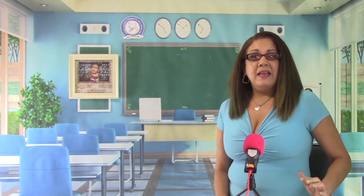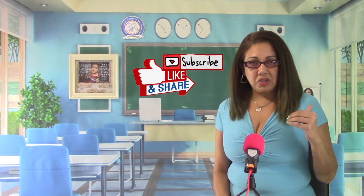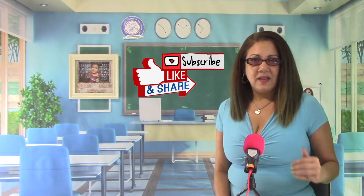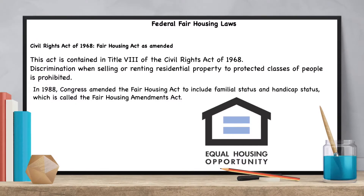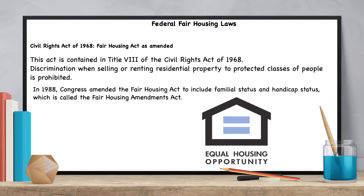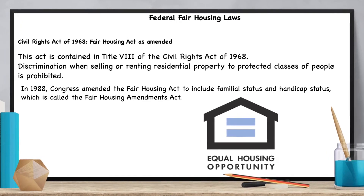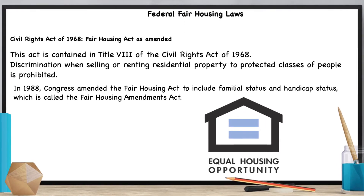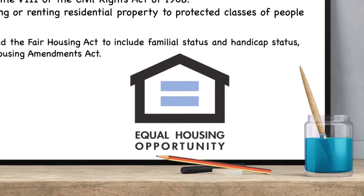The law covers residential dwellings, apartments, and vacant land acquired to construct residential dwellings. In 1988, Congress passed the Fair Housing Amendment Act, which expanded civil rights protections to families and children younger than 18 and pregnant women — now a protected class. The Act refers to this protected class as familial status.